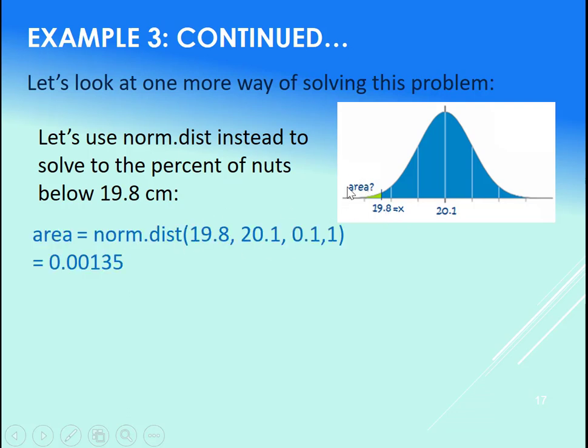In that case, if you're looking for the percentage or the area, use your norm.dist call. So this is also a great way to answer this problem. Use norm.dist, put in the 19.8 for your x, 20.1 for your mean, 0.1 for your standard deviation, and then don't forget the comma 1 when you're using norm.dist. That gives us 0.00135.